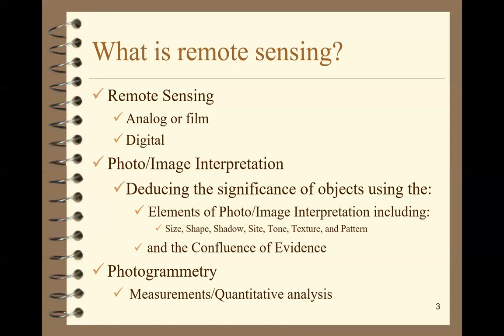The other half of remote sensing is the measurements or the quantitative analysis, which we call photogrammetry. Putting photo interpretation together with photogrammetry, we're able to learn a lot of things about an object without touching it.